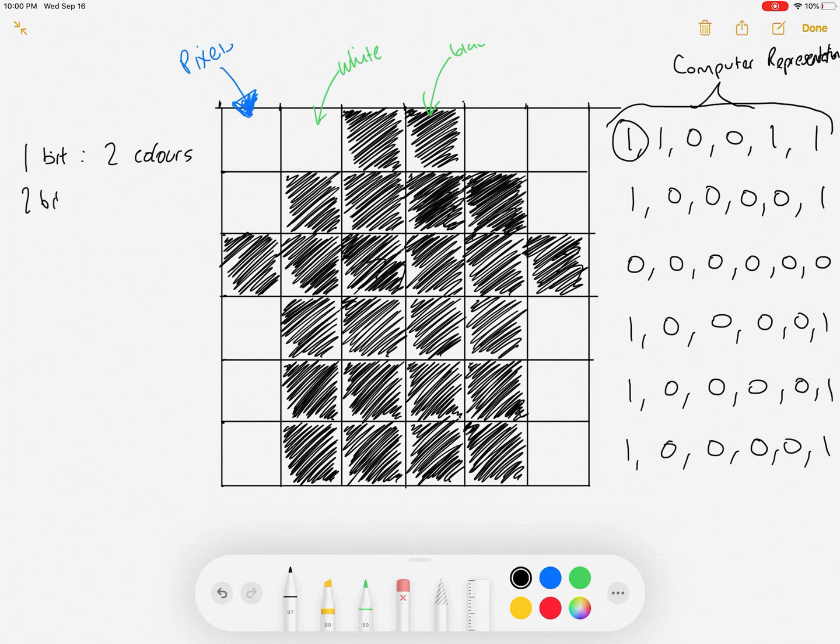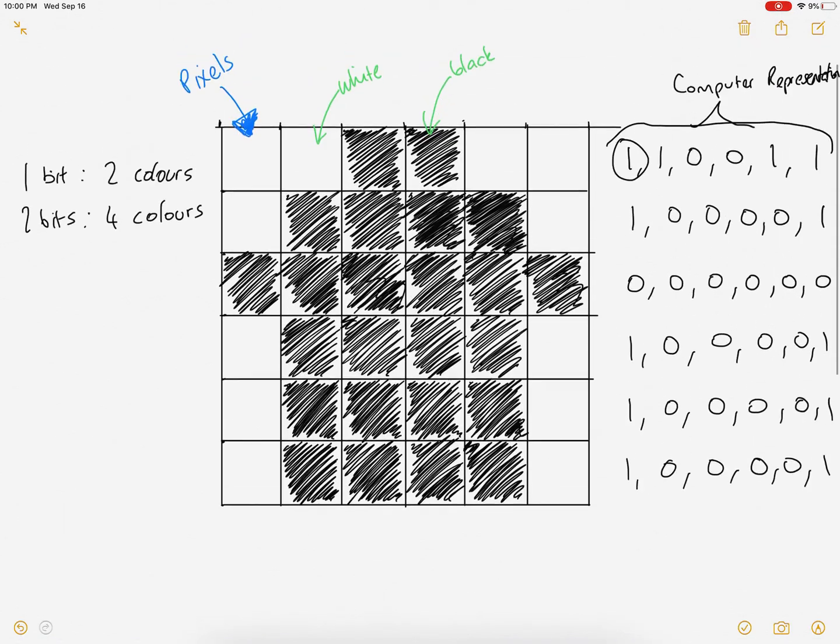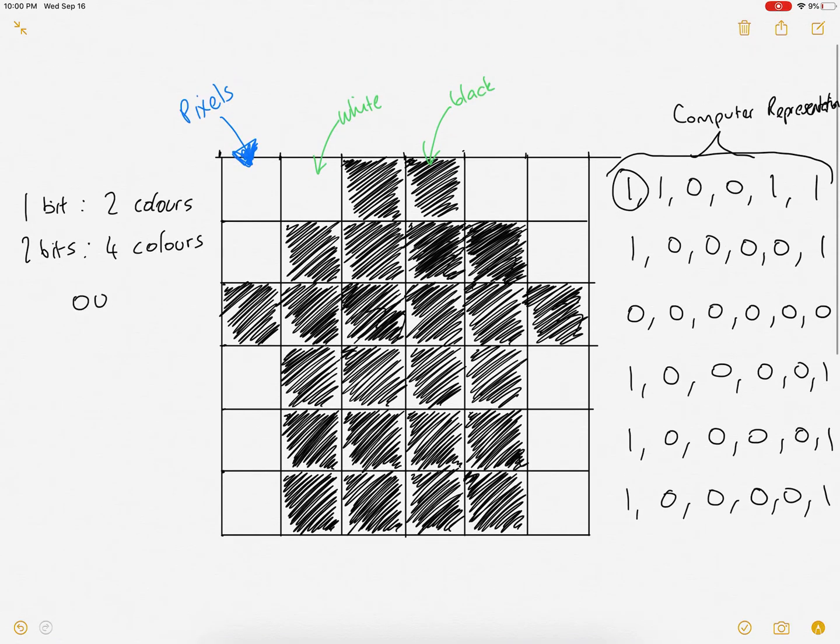If we've got two bits, we can represent four colors. Now if you don't believe me I'm going to write them all, I'm going to write out the different patterns and you can see what I mean.